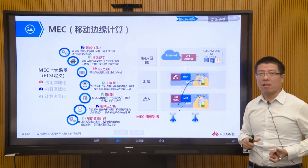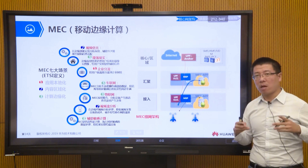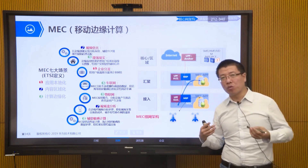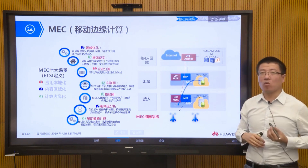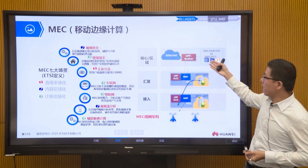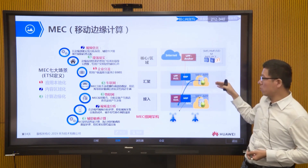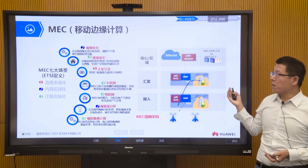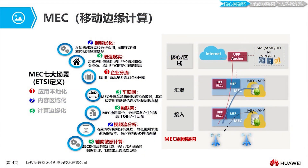The future 5G core network deployment is based on specific applications chosen flexibly. The entire 5G core network is no longer network-element-based but function-based. These functions can be deployed as needed — flexibly in the core data center, regional data center, or edge data center — realizing a demand-oriented network architecture. For example, user plane anchor functions on the core side can sync to user plane functions implemented through edge data centers or MEC, adapting especially well to differentiated vertical industry needs.